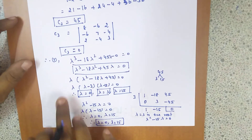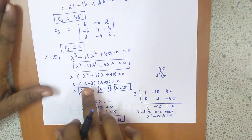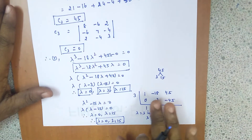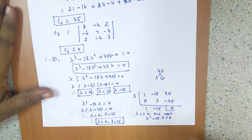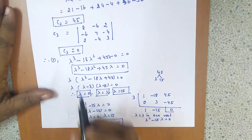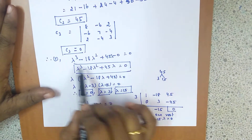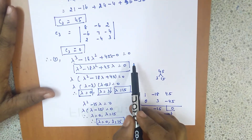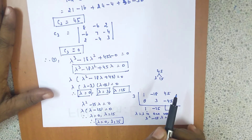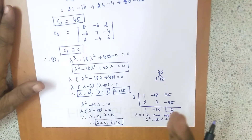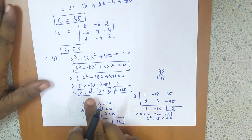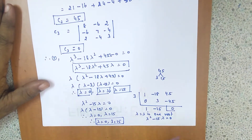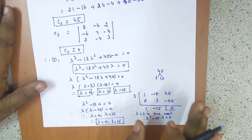Both methods give the same answer. You can use whichever is easier for you, but synthetic division is the better and more advisable method for solving cubic equations. The link for finding the characteristic equation is in the description box, and the next video will show how to solve cubic equations using a calculator — that link is also provided.